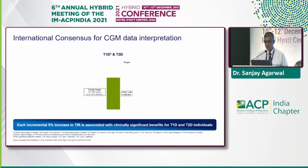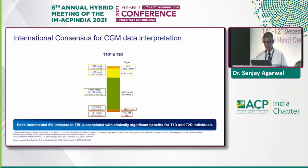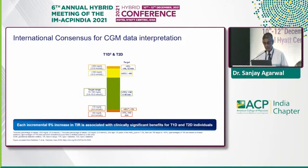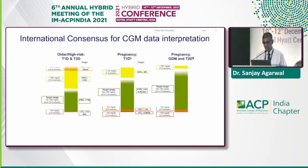What this graph really points out is that most patients should be within the range of 70 to 180 the majority of the time — more than 70% of the time, quantified as 16 hours and 48 minutes. The time allowable above 180 and 250, and the time below range, have also been specified. Studies have shown that each incremental 5% increase in TIR is associated with clinically significant benefits for both type 1 and type 2 individuals.